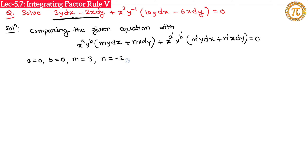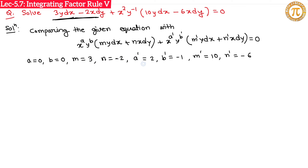For the second part: a' = 2 (from x²), b' = −1 (from y^(−1)), m' = 10 (from 10y dx), and n' = −6 (from −6x dy). So: a=0, b=0, m=3, n=−2, a'=2, b'=−1, m'=10, n'=−6.